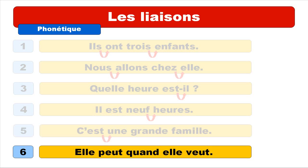And last but not least: elle peut quand elle veut. The liaison goes between quand and elle, and here the D would be pronounced a bit more like a T — quand elle, quand elle. So we get: elle peut quand elle veut. Repeat: elle peut quand elle veut.